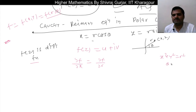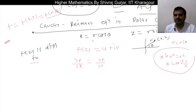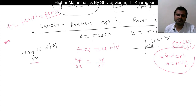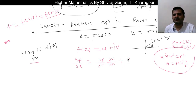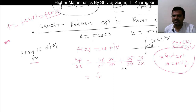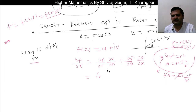And θ = tan⁻¹(y/x). So r is a function of x and y, and x and y are also functions of r and θ. By the chain rule, ∂f/∂x = (∂f/∂r)(∂r/∂x) + (∂f/∂θ)(∂θ/∂x). Now, ∂r/∂x is nothing but x/r.